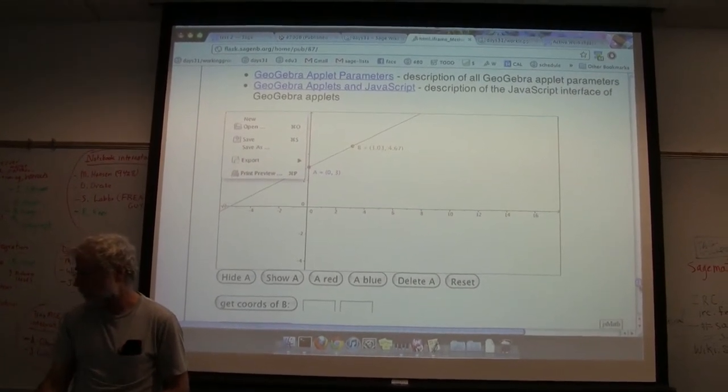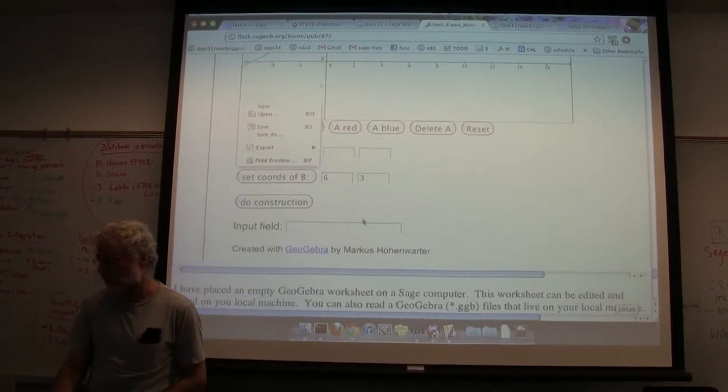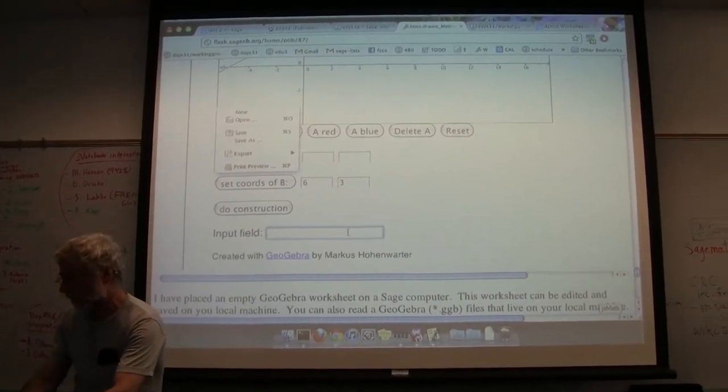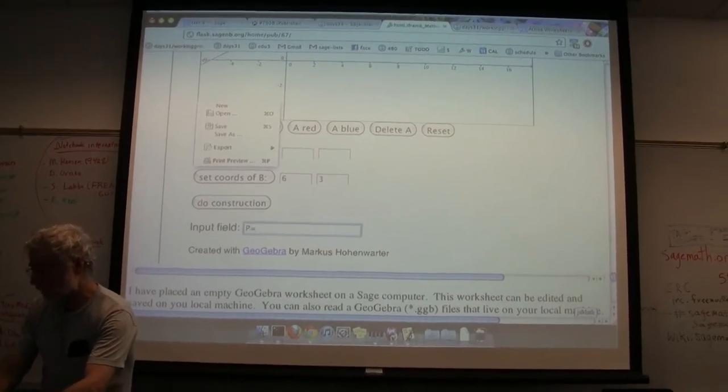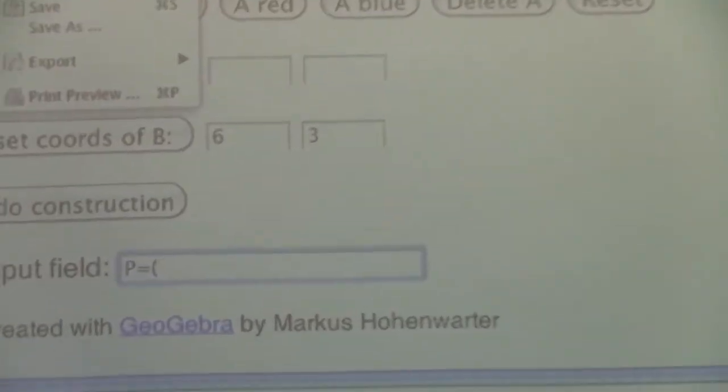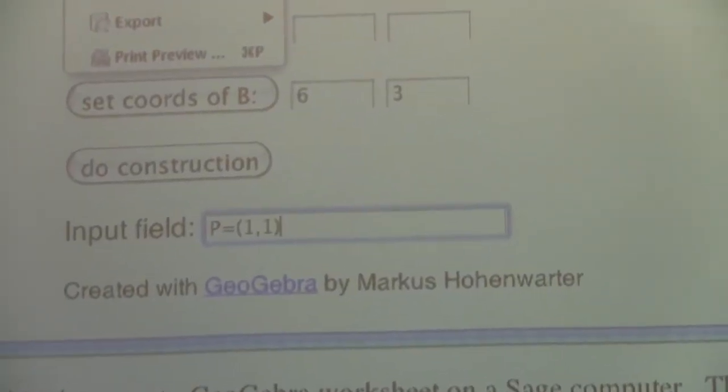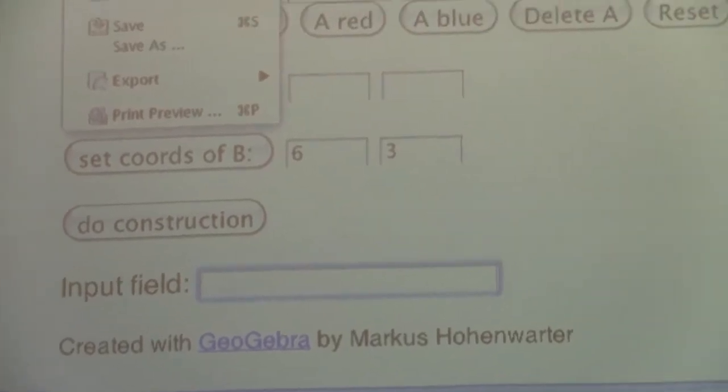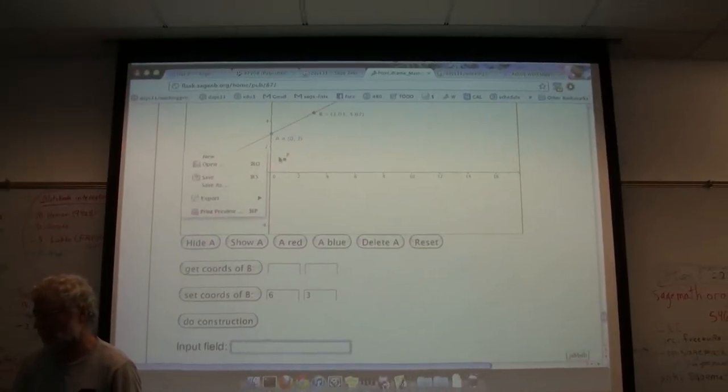I can type in over here, P equals point one comma one. And it should put point P right there. So it's done that.